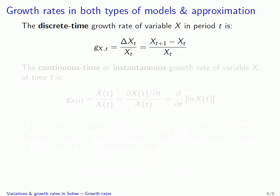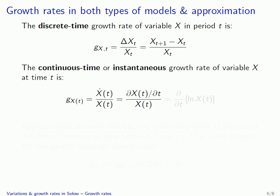In either case, we need to define what the growth rate of a variable x is. In the case of a discrete time model, we use the standard definition: the growth rate g of x_t is the variation of x divided by the variable itself, so it's equal to (x_{t+1} minus x_t) divided by x_t. In the case of a continuous time model, we define the instantaneous growth rate g of x(t) as the ratio between the time derivative of x and x itself — so dx(t)/dt divided by x(t).